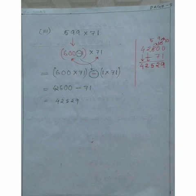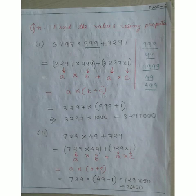Third example: 599 × 71. We write 599 as 600 − 1, so (600 − 1) × 71. Using the distributive property: 600 × 71 − 1 × 71 = 42,600 − 71 = 42,529.